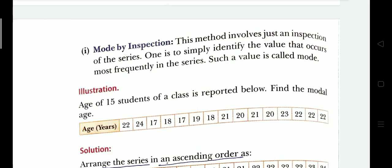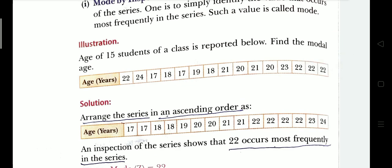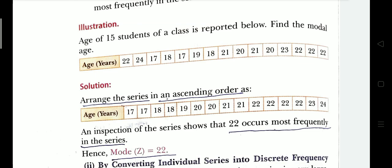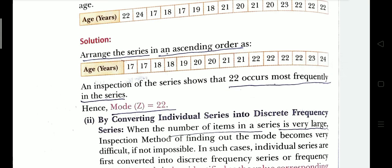This is inspection method - finding the value that occurs most frequently in the series. You can see the age of 15 students of a class is reported below: find the modal age. You can see the age of 20, 22, 24, like that. So you can see 22 appears four times most frequently. So 22 is our mode. Mode is represented by the alphabet Z. You can remember: mean, median, mode - mode is the last letter, that is Z.